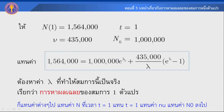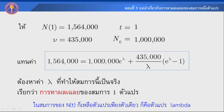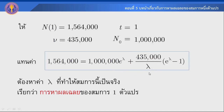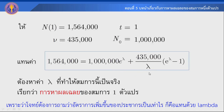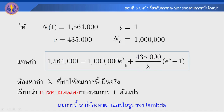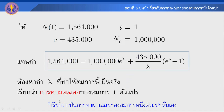แทนค่า N0 ลงไปในสมการของ NT ก็เหลือตัวแปรเพียงตัวเดียว ในที่นี้คือตัวแปร Lambda เพราะว่าโจทย์ต้องการถามว่าอัตราการเพิ่มขึ้นของประชากรมีค่าเท่าไหร่ ก็แทนด้วย Lambda สมการนี้เราก็ต้องหาผลเฉลยในรูปของ Lambda